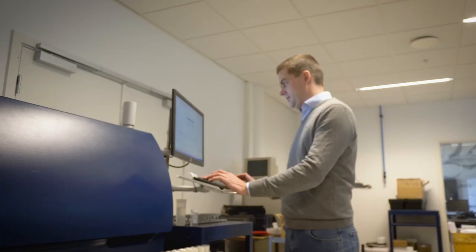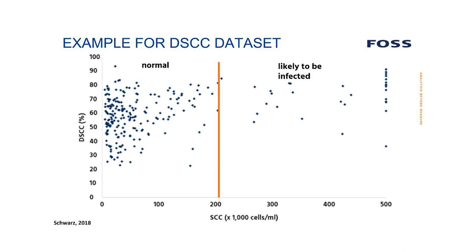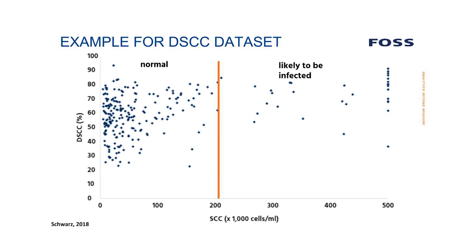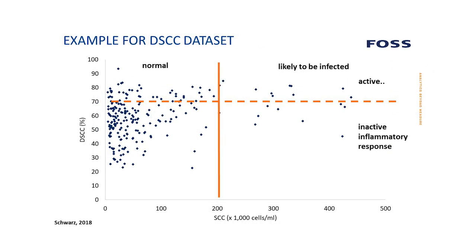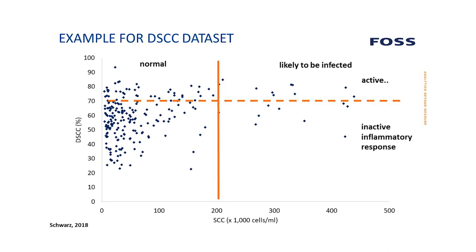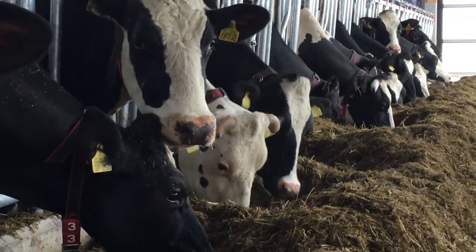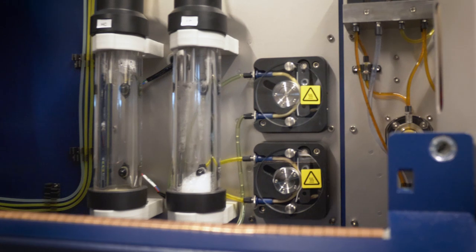Today, somatic cell count is the key parameter for mastitis management in the industry. We are working, for example, with a threshold of 200,000 cells in order to differentiate between cows that are normal or healthy and those that are likely to be infected. In the future, we can add a second dimension to this differentiation — the differential somatic cell count — and use a specific threshold there. We don't have the exact threshold determined today, but that threshold will help us to differentiate between cows that have an active immune response versus those that have an inactive immune response, based on the predominance of PMNs or macrophages.